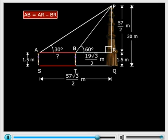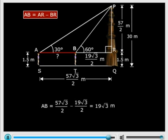Now ST is equal to AB, that's clear. And this should be equal to AR minus BR, as I had mentioned, which is 57 root 3 by 2 minus 19 root 3 by 2. And that gives us 19 root 3 meters. So the boy walked a distance of 19 root 3 meters towards the building.